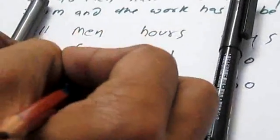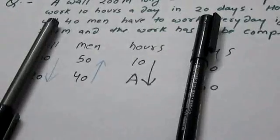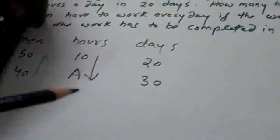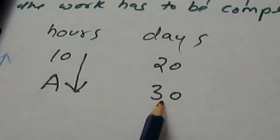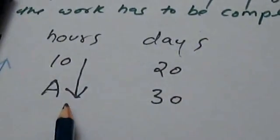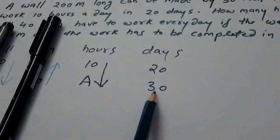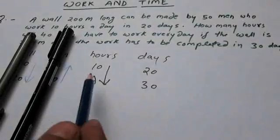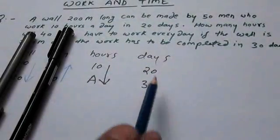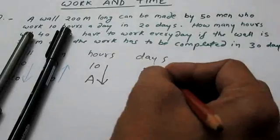Now for men: 50 men are working 10 hours a day. If only 40 men are working, how many hours will they have to work — more or less? More hours, obviously, because there are fewer men. Which is more — 50 or 40? 50 is more, so the arrow points towards 50.